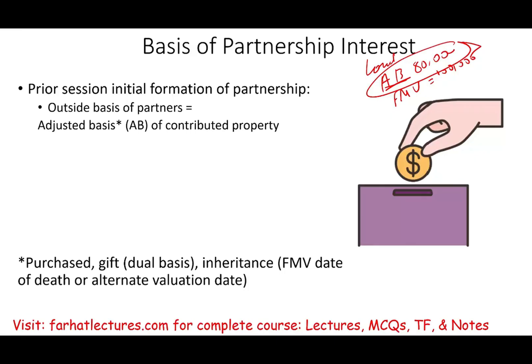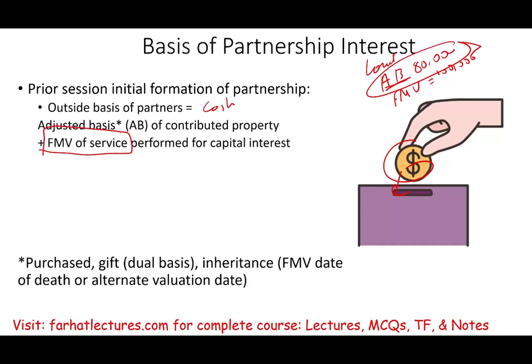How else can you contribute to a partnership? If you have cash, that's easy. How about contributing services? If you contributed services and the fair market value of those services is $50,000 — for example, consulting, legal, or accounting work — that fair market value becomes part of your basis.